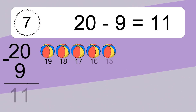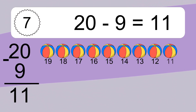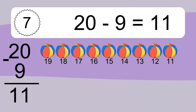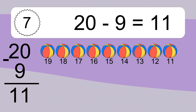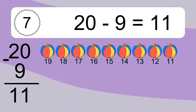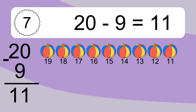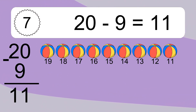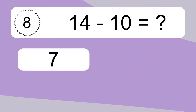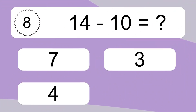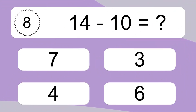20 minus 9 equals 11. Let's count it. 19, 18, 17, 16, 15, 14, 13, 12, 11. 14 minus 10 equals what?